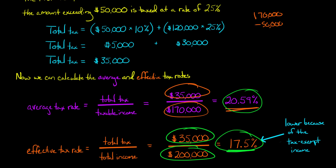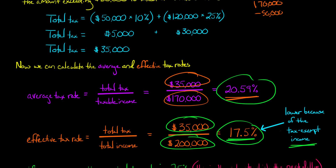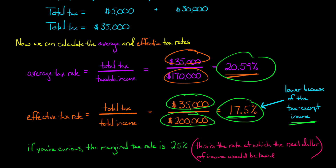Note that the effective tax rate is actually lower than Tony's average tax rate, and the reason is that Tony has some tax-exempt income. So even though his average tax rate is 20.59%, effectively — because he had some income that was not taxed at all — his effective tax rate is lower at 17.5%.